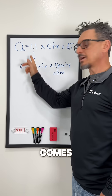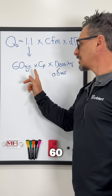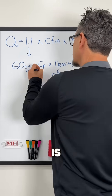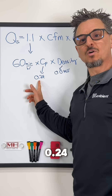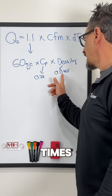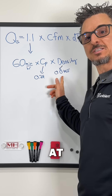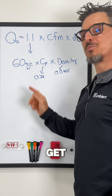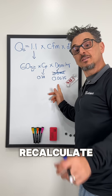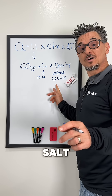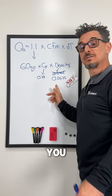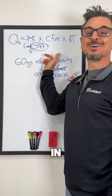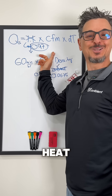This 1.1 comes from multiplying 60 times the specific heat of air, which is 0.24, times the density. At sea level, you get 1.1. If you recalculate this using the elevation in Salt Lake City, you get 0.97 as your convenient factor in the sensible heat equation.